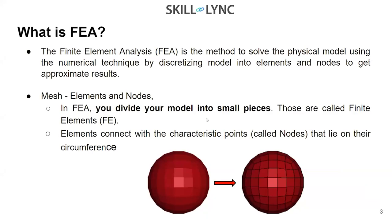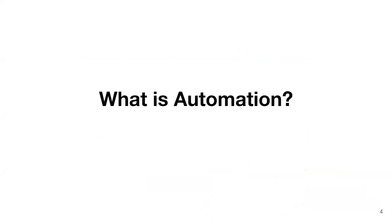Now, what exactly is automation? When you hear automation, the first thing that comes to mind is robots or artificial intelligence being used in industries to work automatically. But when talking about automation in R&D software terms, we're specifically discussing process automation. Let me give you an example of what process automation means.